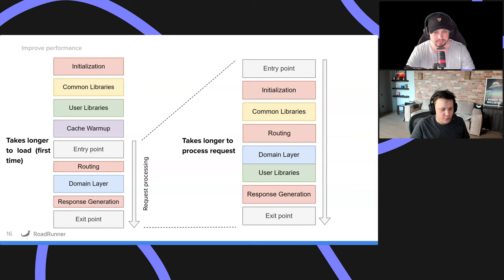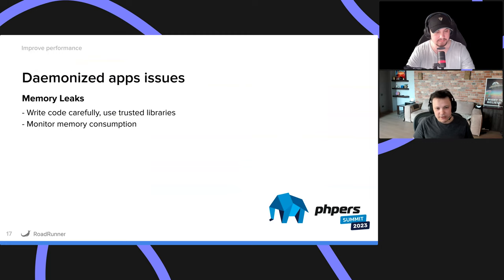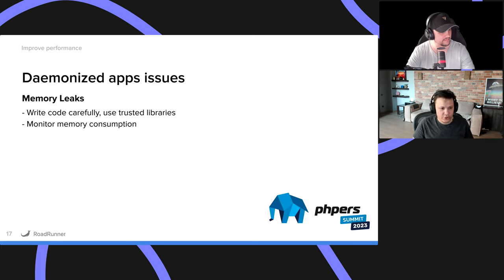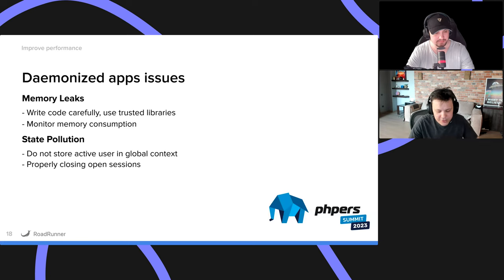That's what you can get when you move all the bootstrapping outside of your code. The free cheese is only in a mousetrap — there are things you have to remember when building daemonized applications because they stay in memory pretty much indefinitely. Number one: memory leaks. Just write code carefully, don't use global variables, don't store user state in a static property, and you'll be good. Plus there are instruments embedded in Roadrunner which actually monitor your memory consumption and alert you. State pollution is a different, harder problem — this is when you send one request and on the second request you somehow appear to be inside another user's account — which happens when you put user authentication in a static global variable.